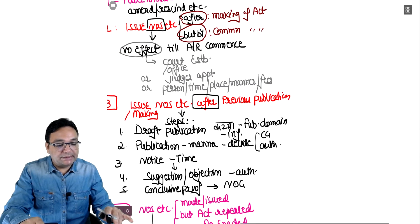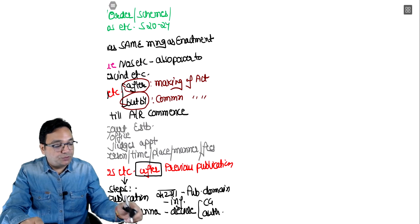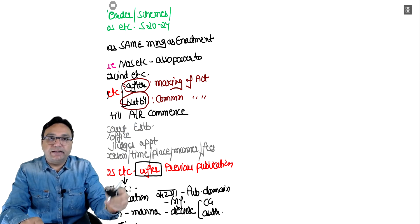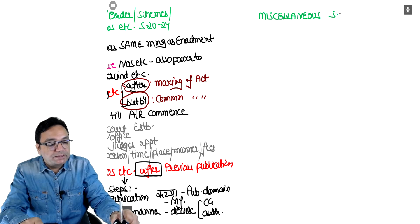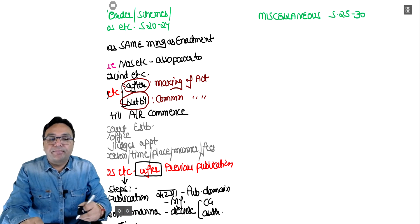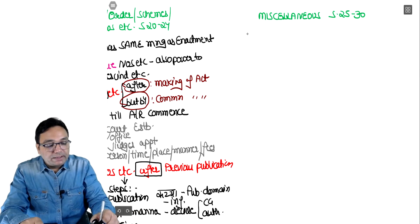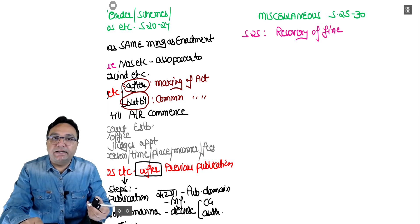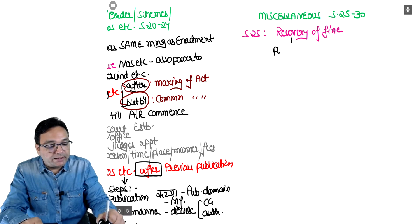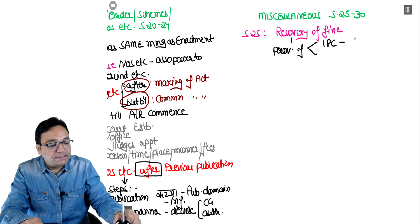With sections 20-24 complete, we move to the last question - GCA Act miscellaneous part, sections 25 to 30. Section 25 talks about recovery of fine. Many acts have various fines - how will the fine be recovered? The provisions of IPC sections 63 to 70 and CRPC procedure will be followed because you are not paying the money.